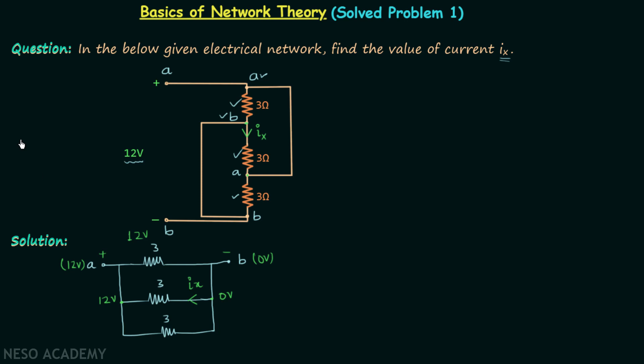in this branch. We will start from this point and we will end at this point. So we have 0, then we have minus 3 times Ix, and then we will equate with 12. From here we are getting current Ix equal to minus 12 divided by 3 amperes, or we can say Ix is equal to minus 4 amperes. So this is our answer.